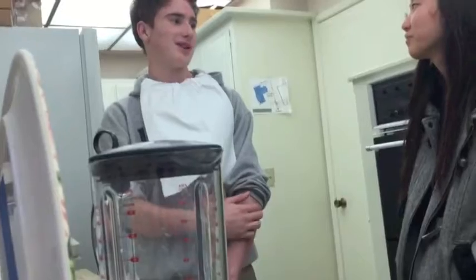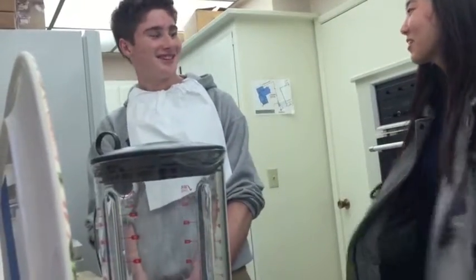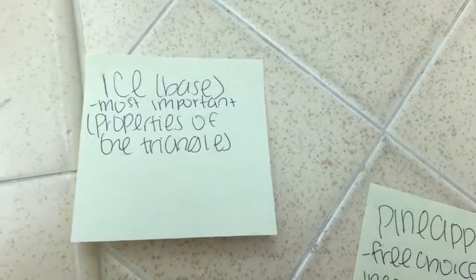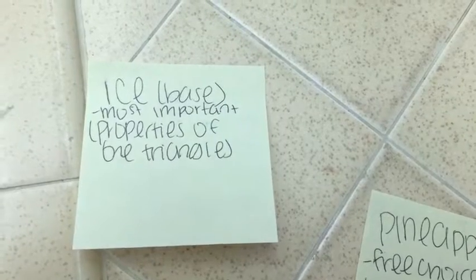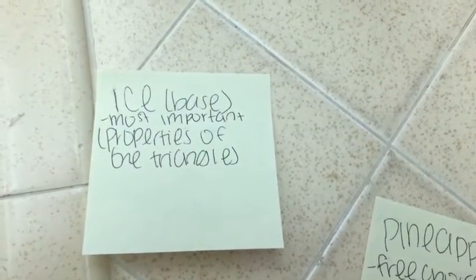There are three main components to each math chapter, just like a smoothie. And what are those? The basic meaning of a smoothie is ice, just like how properties of a triangle are the most important part of chapter five.